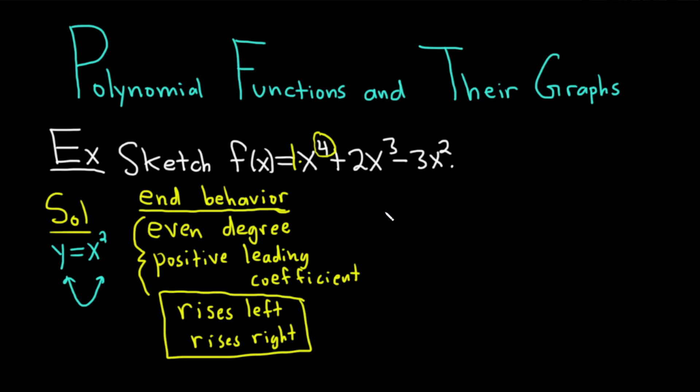Okay, now let's go ahead and find the y-intercept. To find the y-intercept for any function, you always plug in 0. So f of 0 is equal to 0 to the 4th plus 2 times 0 cubed minus 3 times 0 squared. We get 0 plus 0 minus 0, so the whole thing is 0, so we just get 0. So f of 0 is 0, so our y-intercept is the ordered pair 0 comma 0.